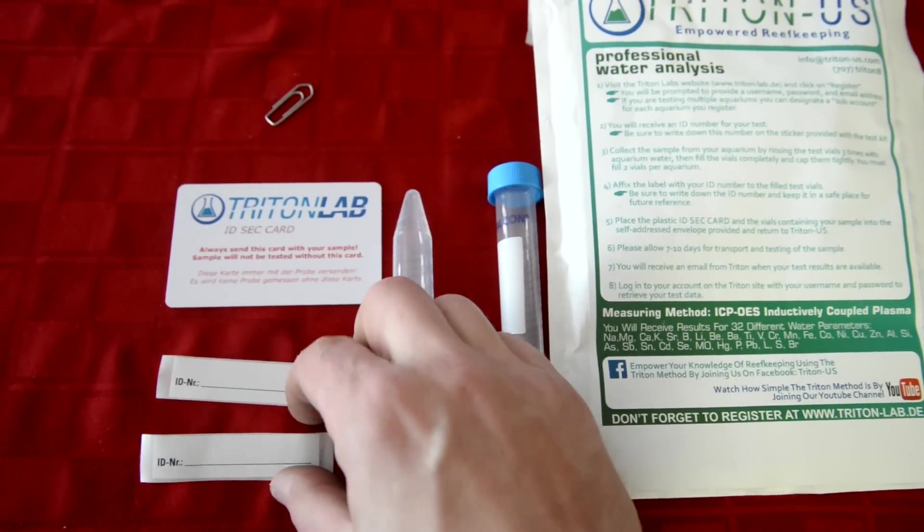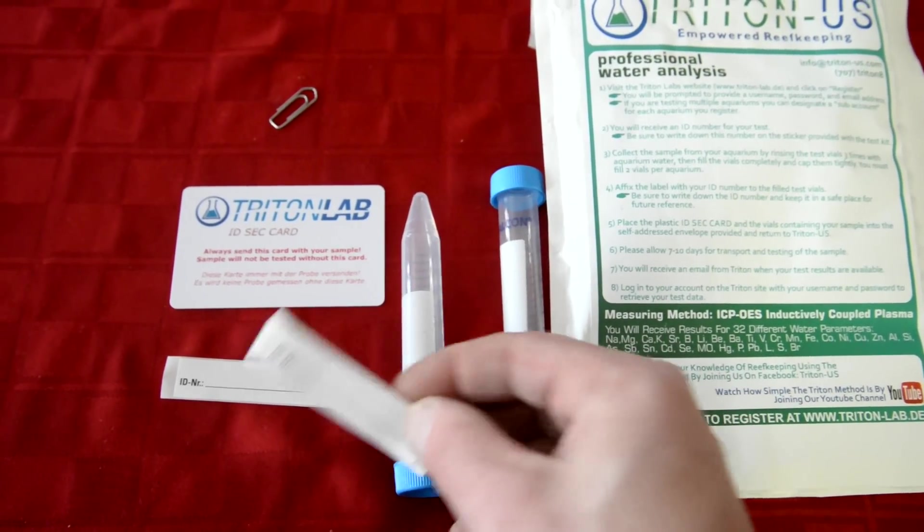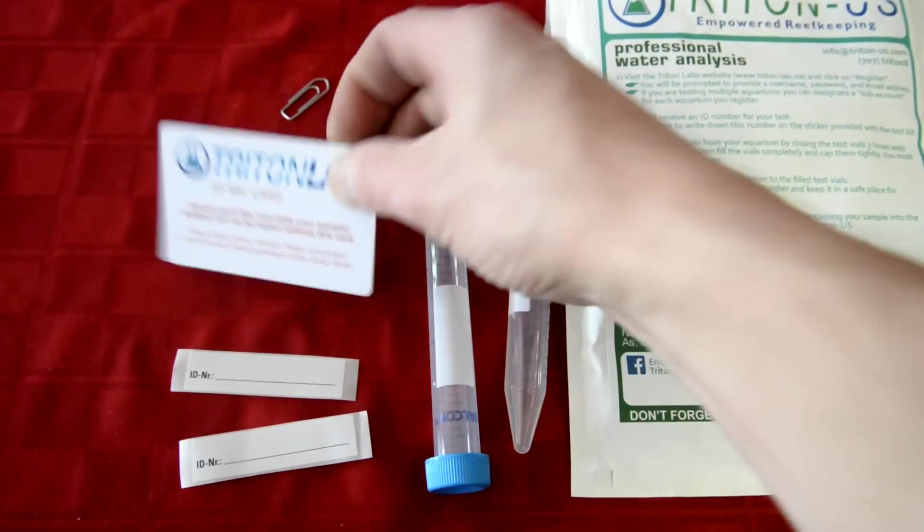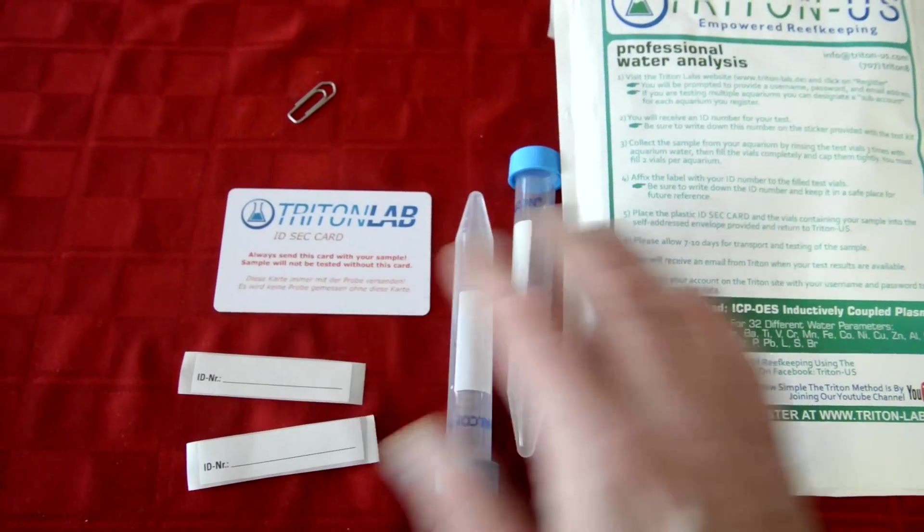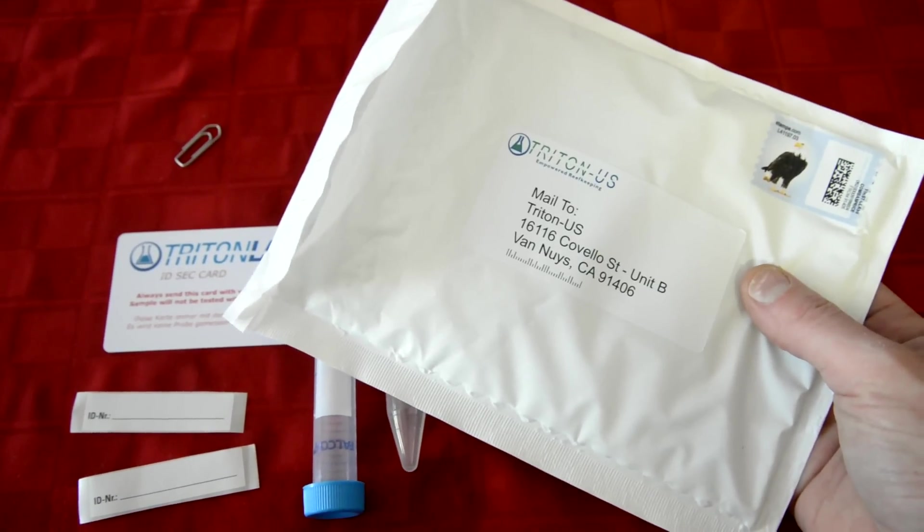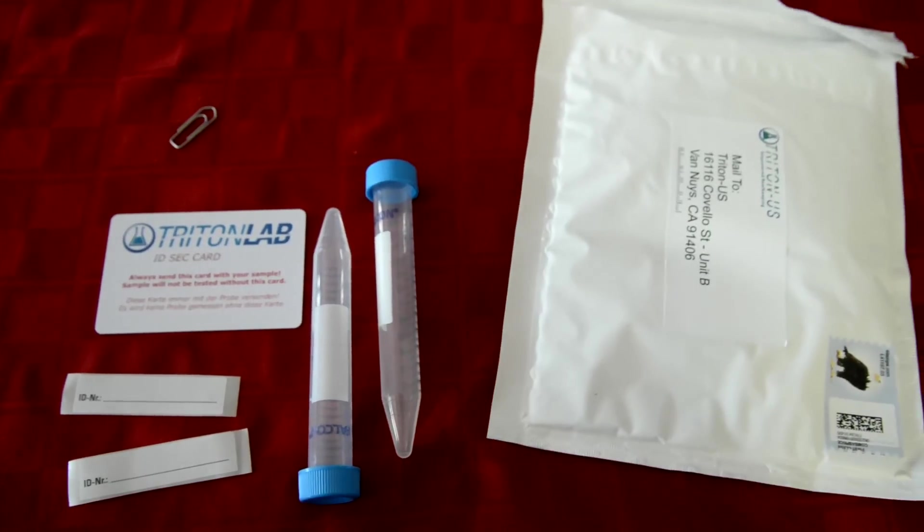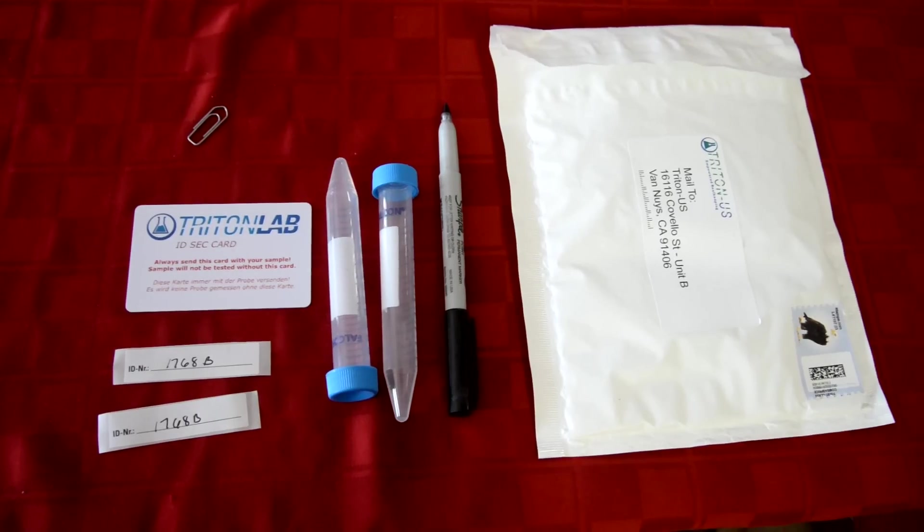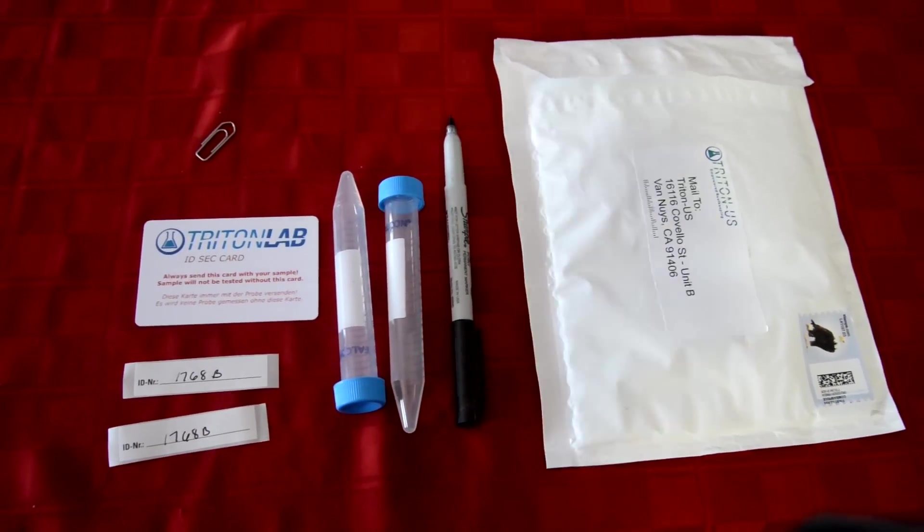So for us, the best way I can explain this folks is you can go to Triton US, you can buy about a $50 packet like this, send them your water sample with some ID numbers on it that you gain from when you register on the computer, you're set up.